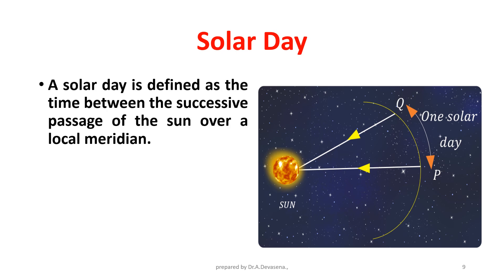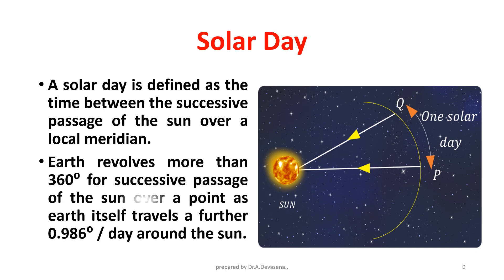A solar day is defined as the time between the successive passage of the sun over a local meridian. Earth revolves more than 360 degrees for successive passage of the sun over a point, as Earth itself travels a further 0.986 degrees per day around the sun.